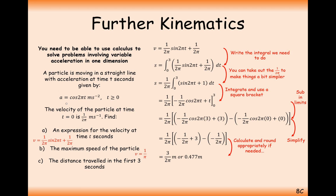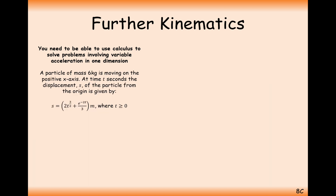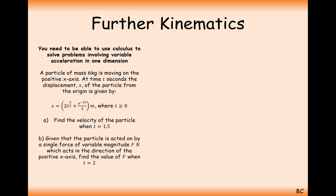So using integration you can start from acceleration, work your way through to velocity, and then to displacement. Now let's go the other way — using differentiation to get from displacement to acceleration. In this question, a particle of mass 6 kilograms is moving on the positive x-axis. At time t seconds, the displacement s is given by s equals 2t to the power 3/2 plus e to the minus 2t over 3 meters. Part b will use f equals ma, but let's do part a first.